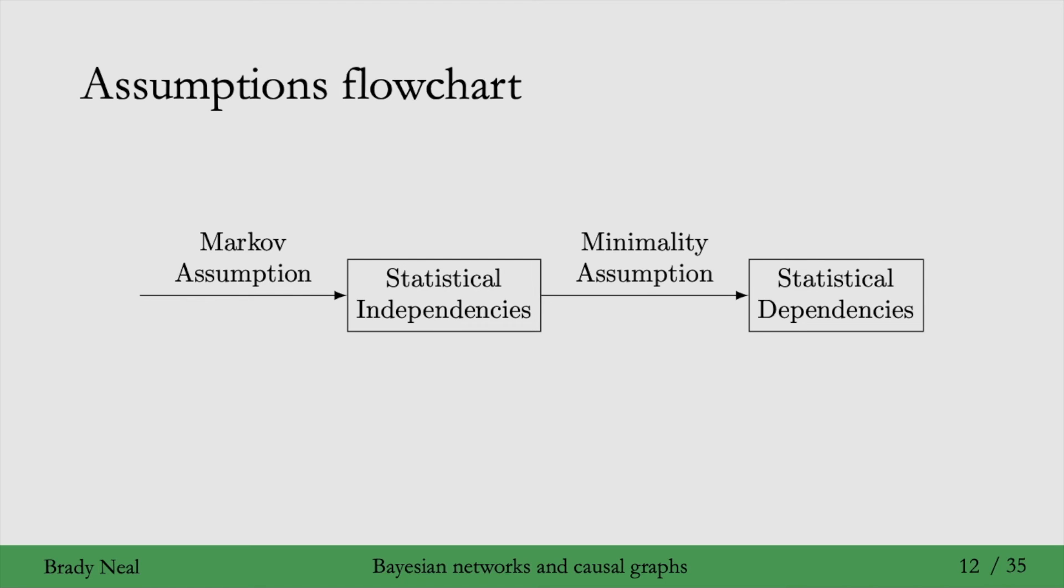So, the two assumptions we've seen so far are the Markov assumption and the minimality assumption. And the Markov assumption gets us to statistical independencies. It lets us read off statistical independencies about a distribution given a corresponding directed acyclic graph. Then, the minimality assumption, when we add in that second part, we get statistical dependencies. So, we can read off statistical dependencies in the graph, at least between adjacent nodes.